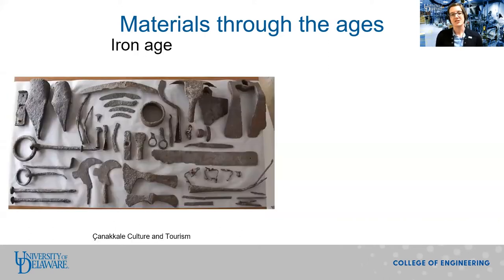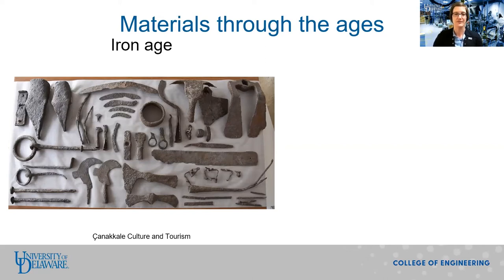The next major age is the Iron Age. Iron is much more abundant than the tin and copper used in bronze. Although iron had been known for centuries, it was not as widely used as bronze due to the difficulty in working iron. Metalworkers in the Iron Age learned to improve iron through a variety of physical and chemical processes, making a material that was stronger, lighter, and harder than bronze, while also being easier to source. Iron was widely used in agriculture and construction.